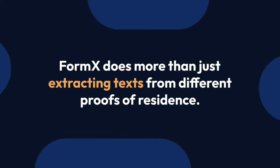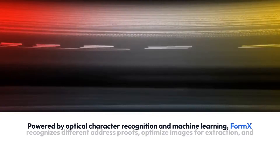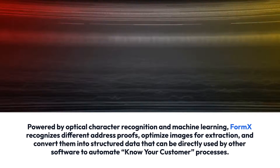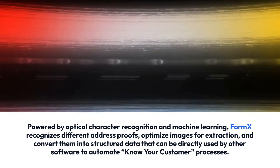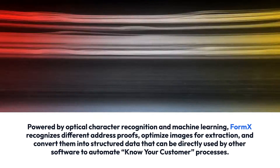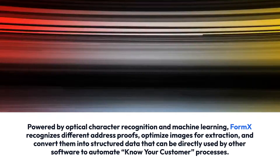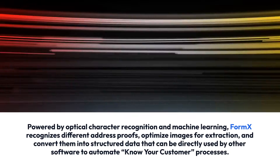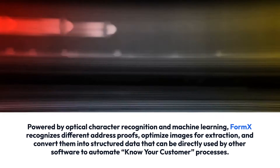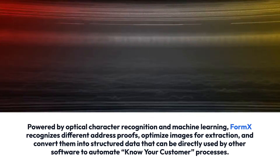Form X does more than just extracting texts from different proofs of residence. Powered by optical character recognition and machine learning, Form X recognizes different address proofs, optimizes images for extraction, and converts them into structured data that can be directly used by other software to automate processes.